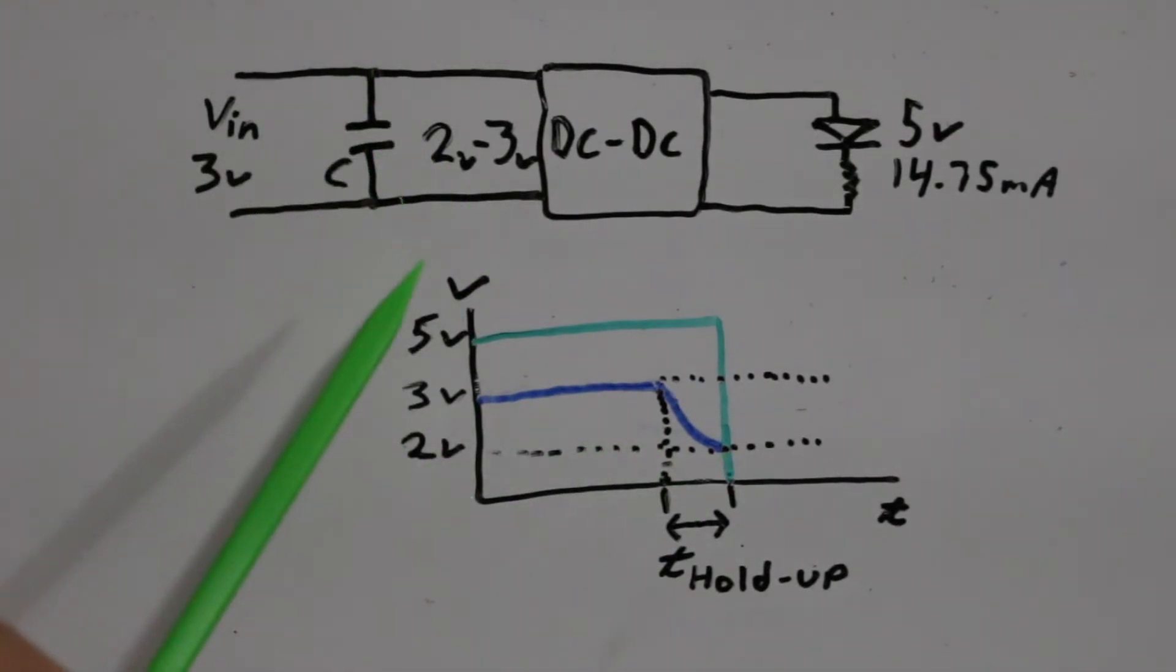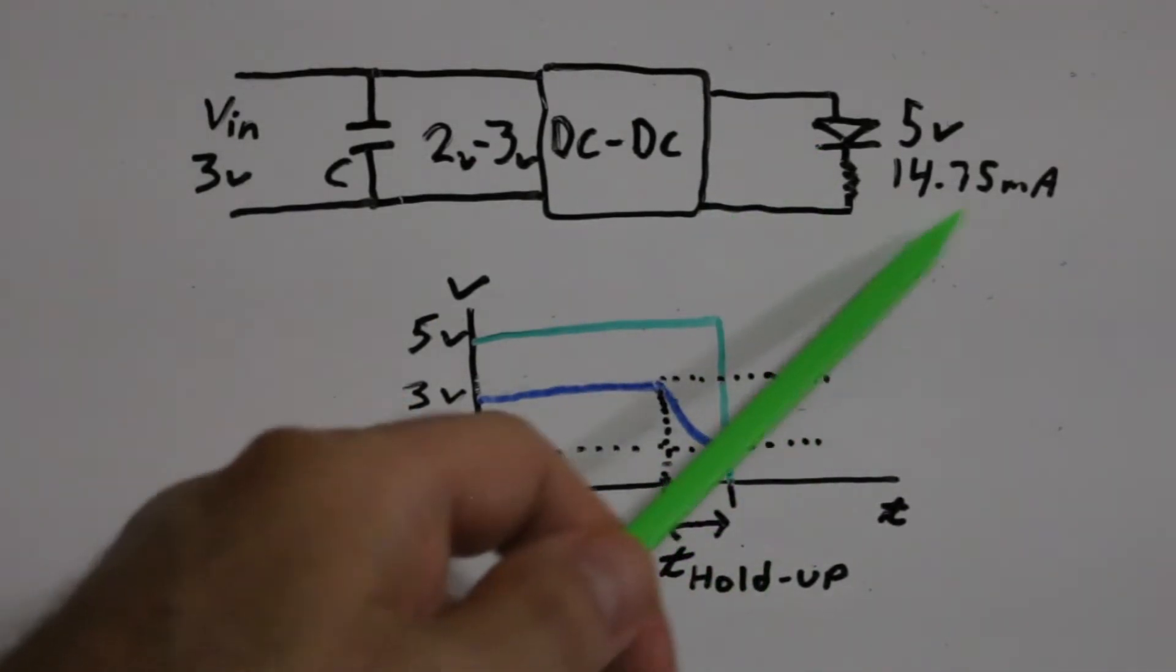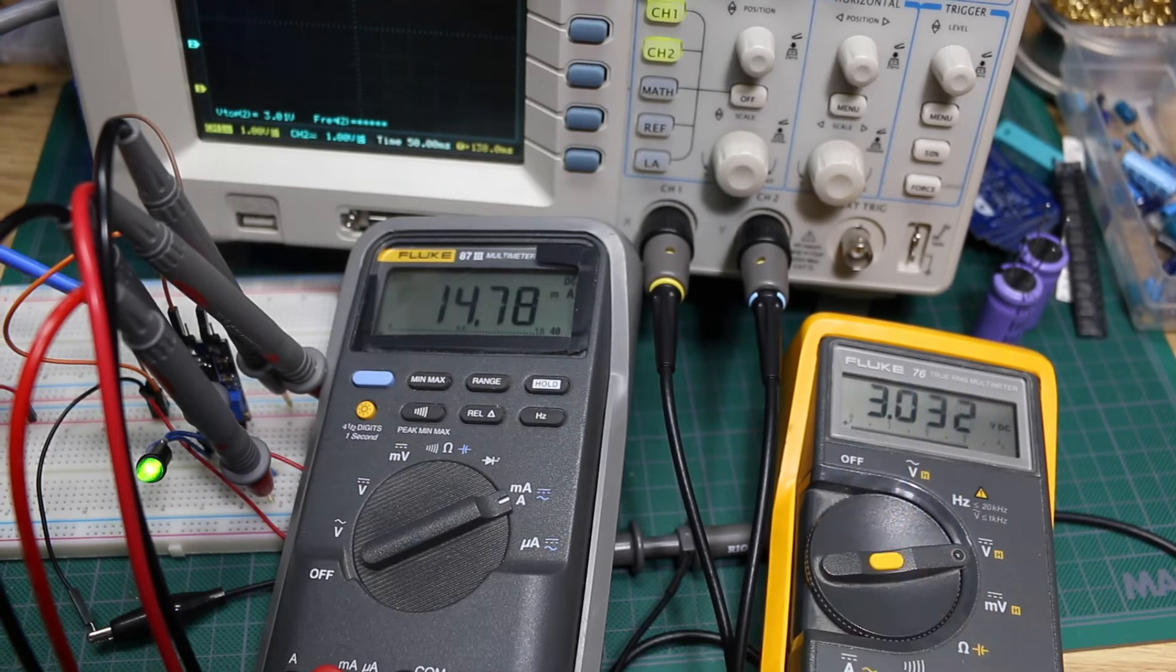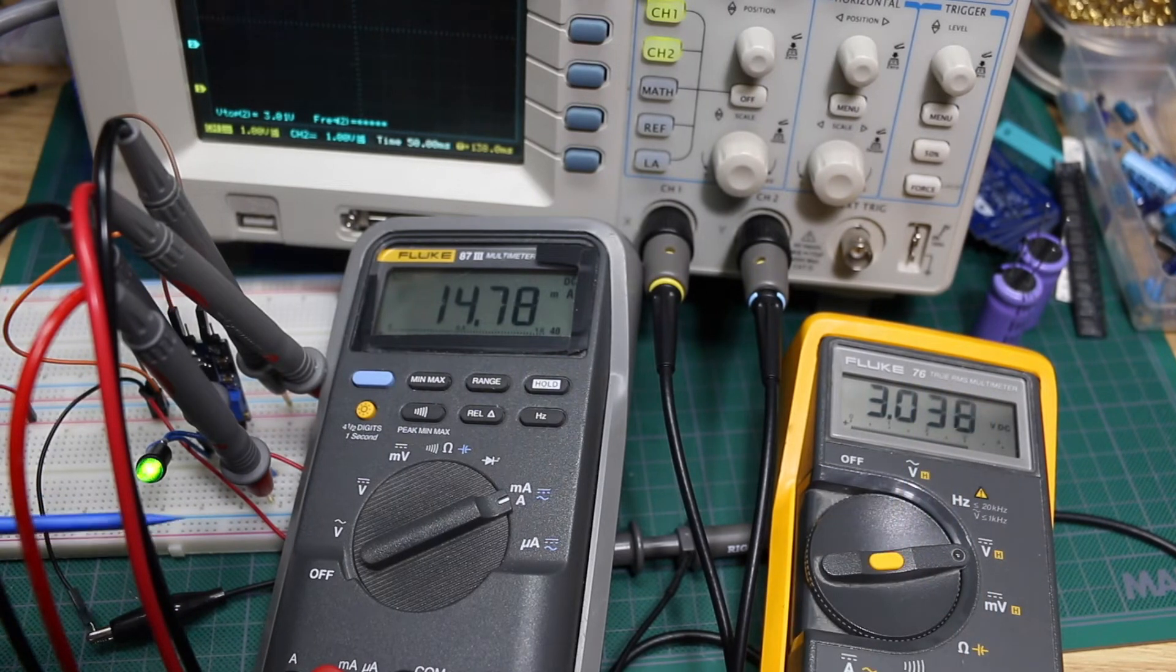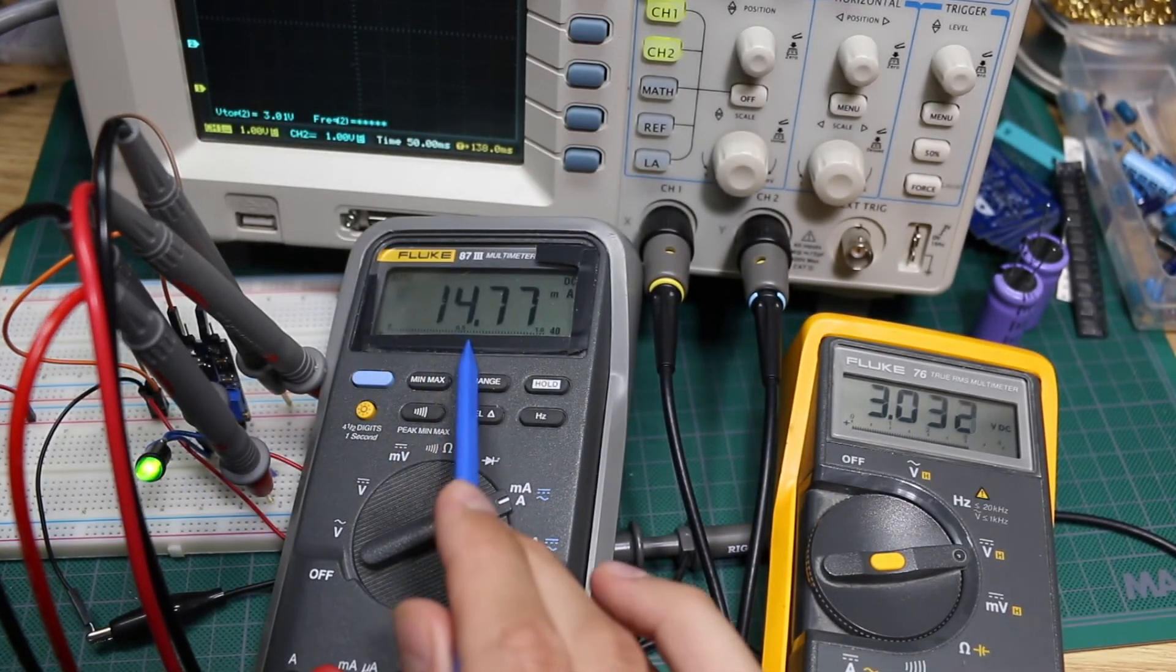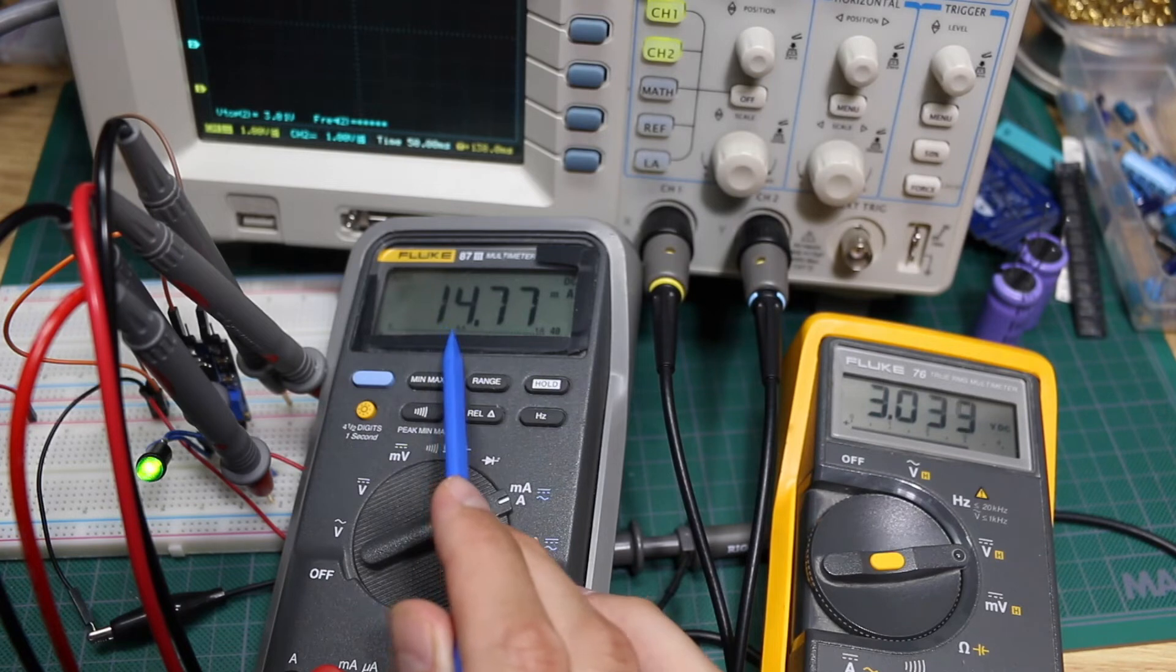With a known capacitor, how long can I power this LED at this load? This is the main input voltage to the boost converter driving this light. So starting at 3 volts.